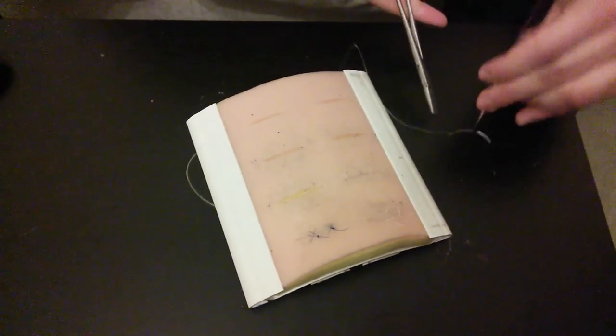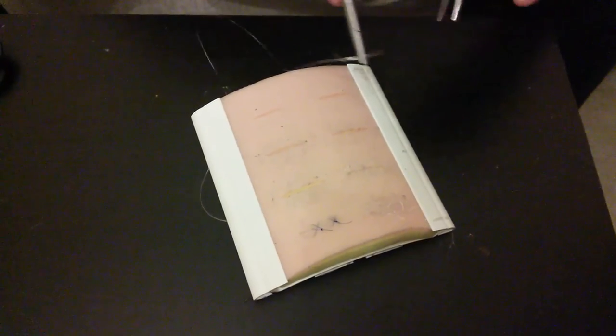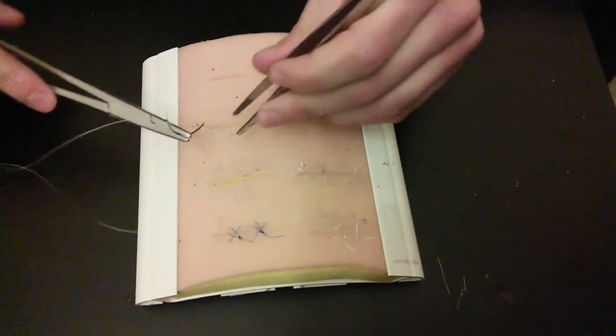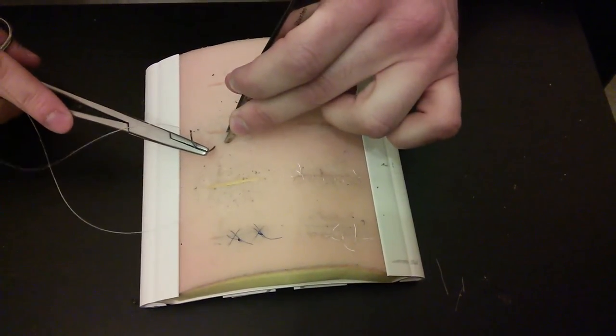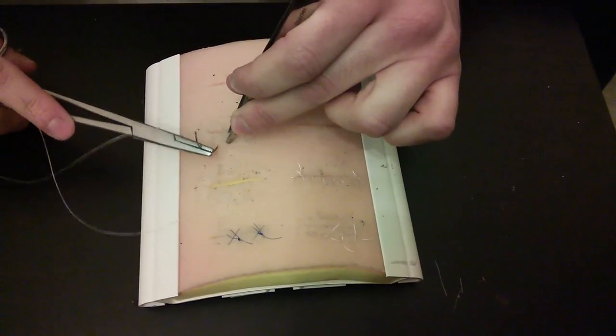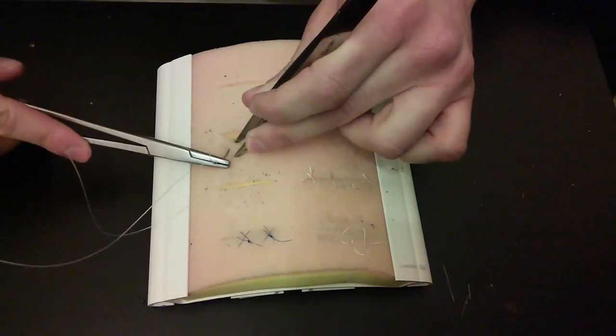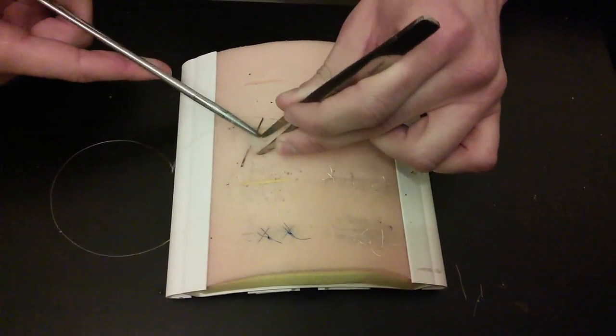Remember we cannot touch the needle with our hand, but we can with the forceps. Now that we have started it, we are going to start on the opposing side and take a bite about 5-8mm away. We are going to go through once and out again before the edge of the wound, and pull it through.